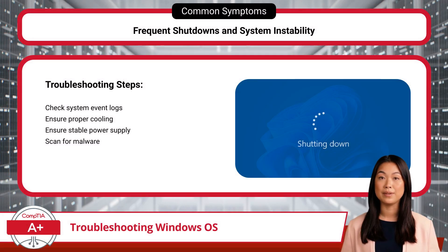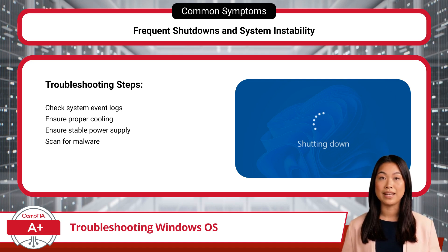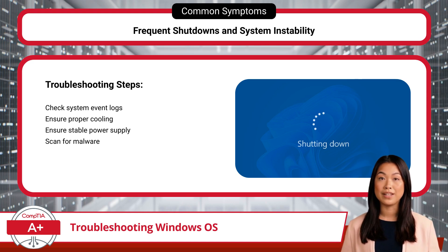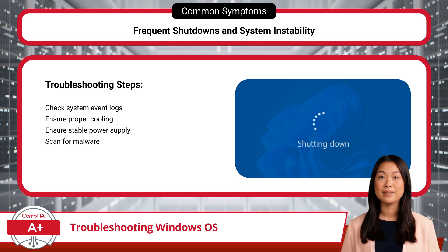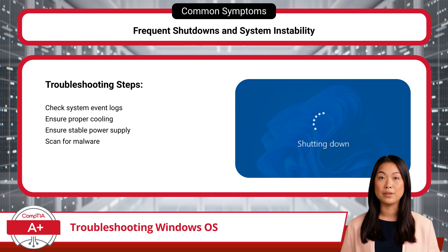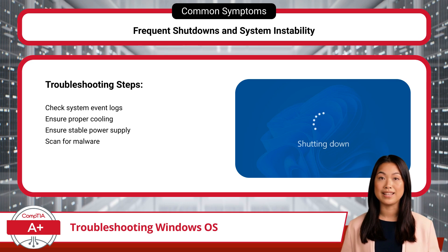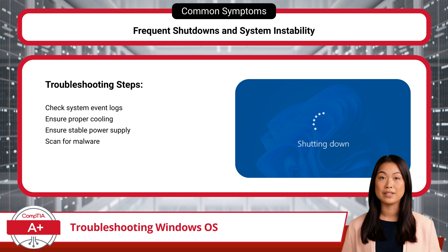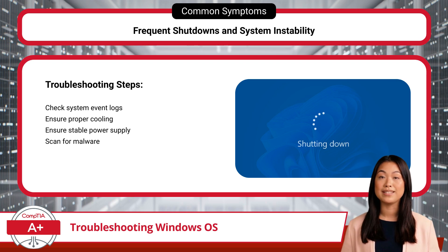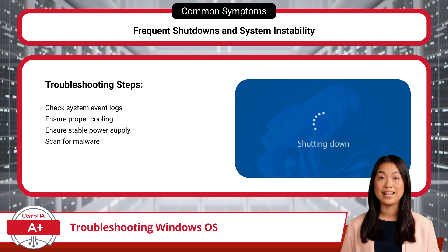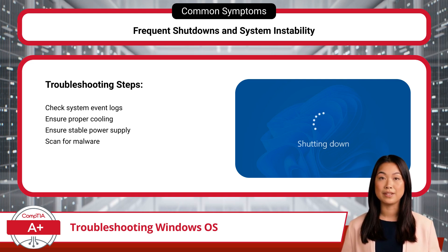If the system frequently shuts down unexpectedly or exhibits instability, such as freezing, crashing, or erratic behavior, it could be caused by hardware issues, overheating, or malware. Begin by checking the system event logs for error messages that could provide clues about the root cause. Make sure the system has proper cooling and a stable power supply, as overheating or power fluctuations can contribute to shutdowns and instability. If the issue persists, consider the possibility of malware disrupting processes, corrupting files, or consuming system resources. Run a full malware scan using up-to-date antivirus software and remove any detected threats. After cleaning the system, reboot to see if stability is restored.